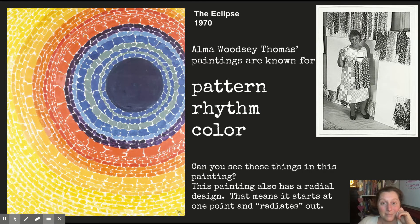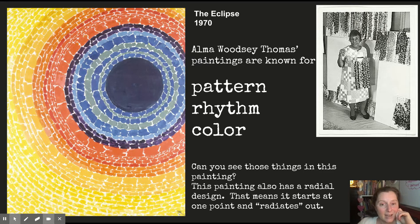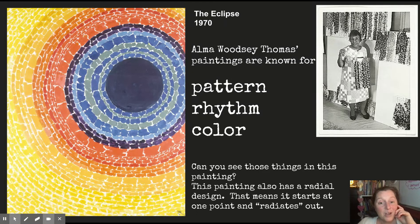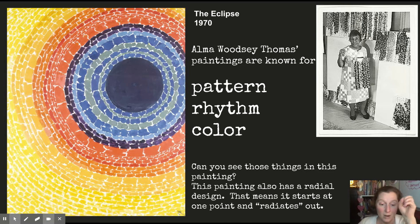This is a painting by Alma Woodsy Thomas, and it's called The Eclipse. Alma Woodsy Thomas's paintings are known for pattern, rhythm, and color. Can you see those things in this painting? This painting also has a radial design. That means it starts out at one point, and it radiates out like the sun.